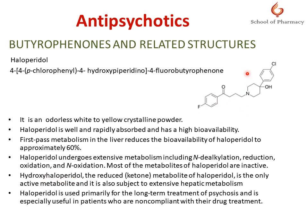Hydroxyhaloperidol, which is one of the reduced ketone metabolites — where a hydroxyl group replaces the ketone group — is the only active metabolite of haloperidol, and it is also subject to extensive hepatic metabolism. Haloperidol is used primarily for the long-term treatment of psychosis, especially in those patients who are non-compliant with other drug treatments. That is why this haloperidol is very important in patients who are non-compliant with other types of antipsychotic drugs.